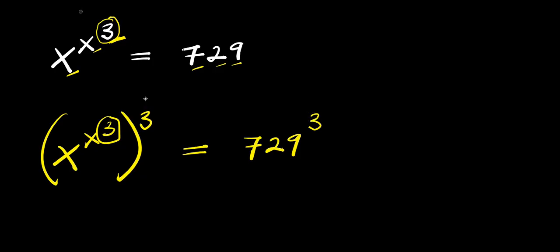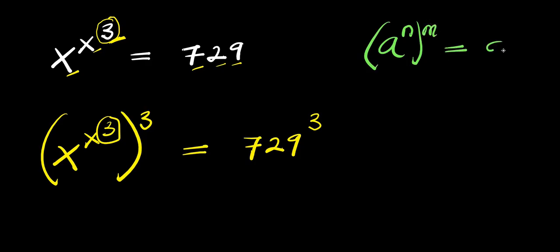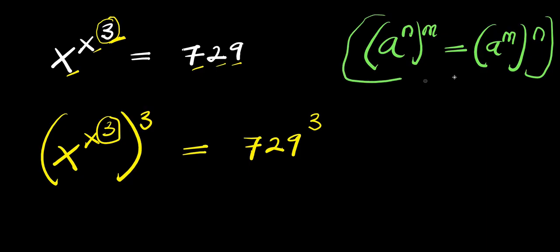Now let's consider this index law: if you have a to the power of n, raised to the power of m, this equals a to the power of n times m. We are going to apply this identity right here.